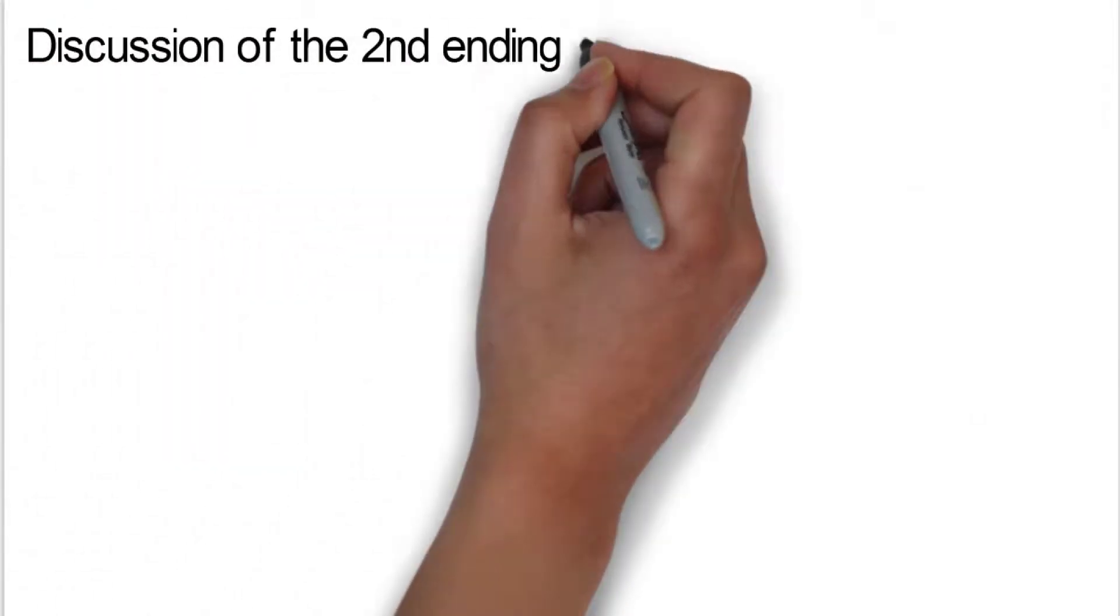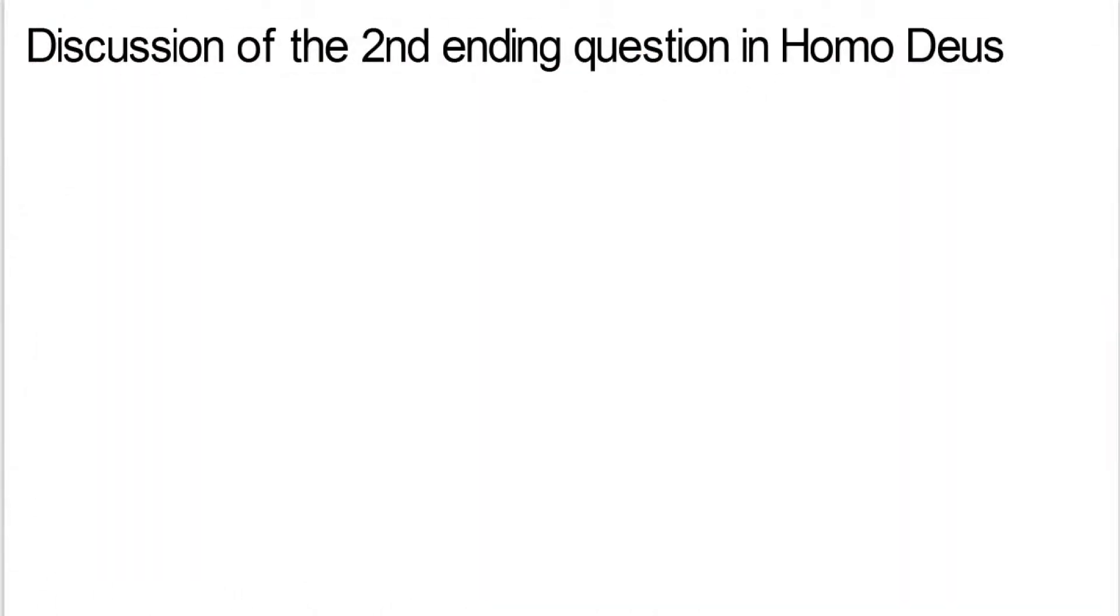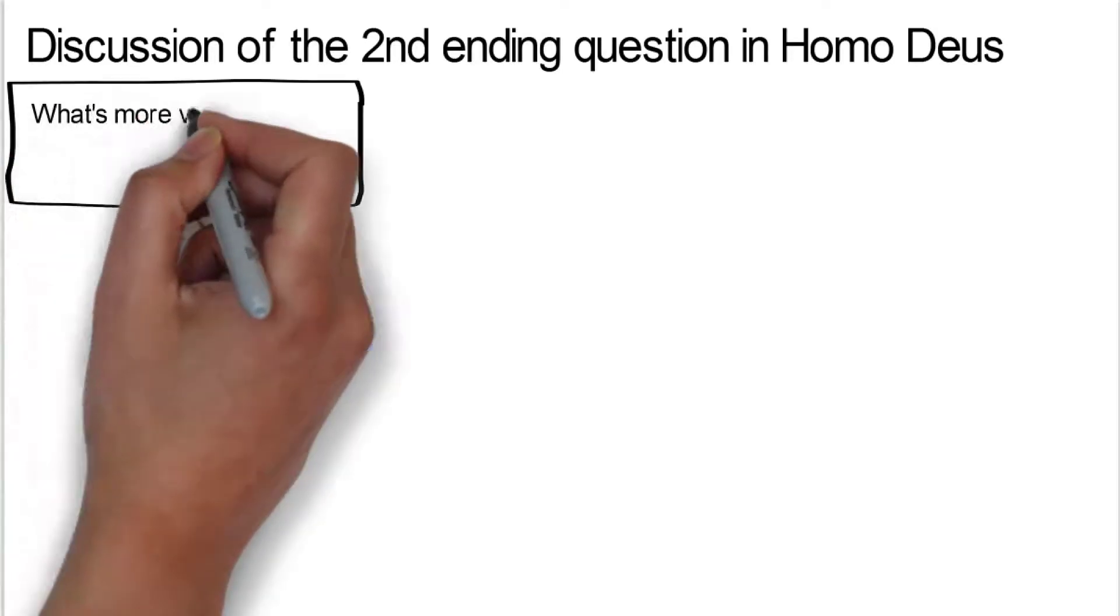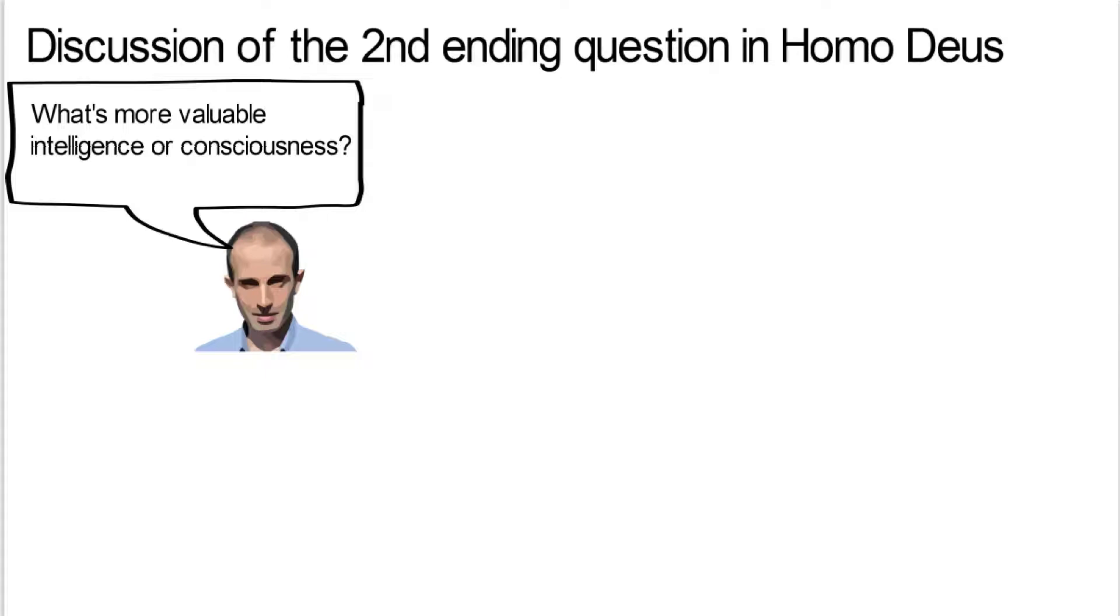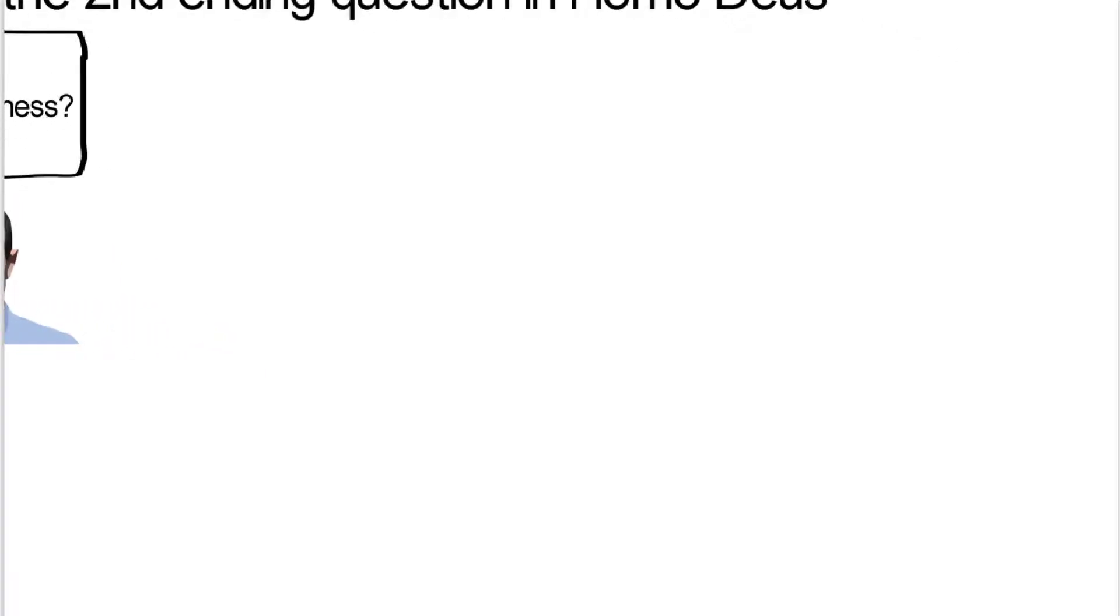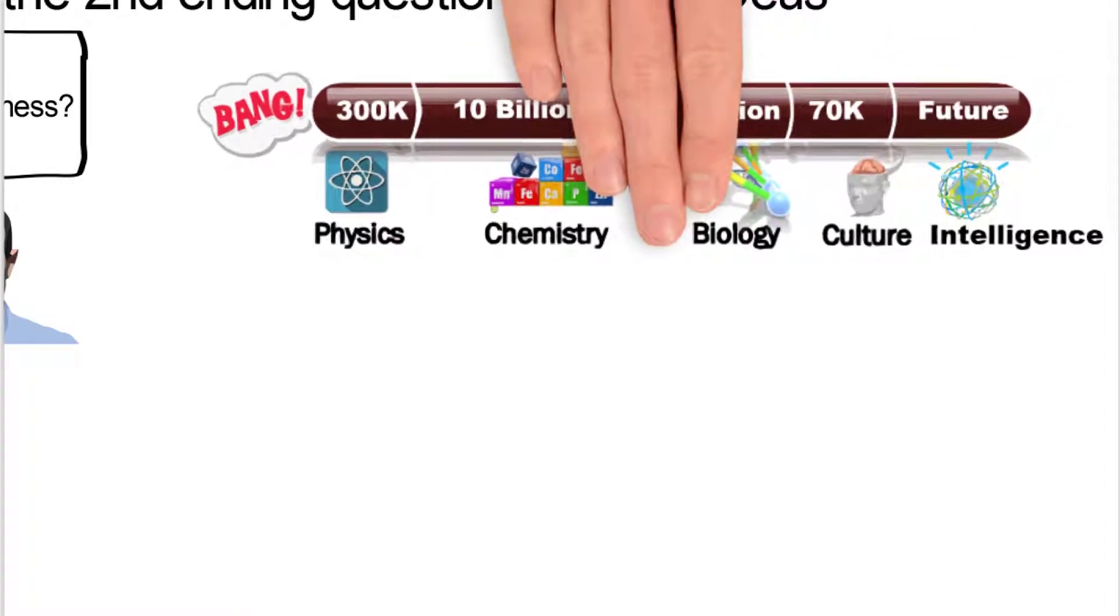What we're going to be talking about here is a discussion of the second ending question in Homo Deus by Harari. The question is: what's more valuable, intelligence or consciousness? That's what Harari is asking us, and that's the question we're going to look at a little deeper as we go through here.